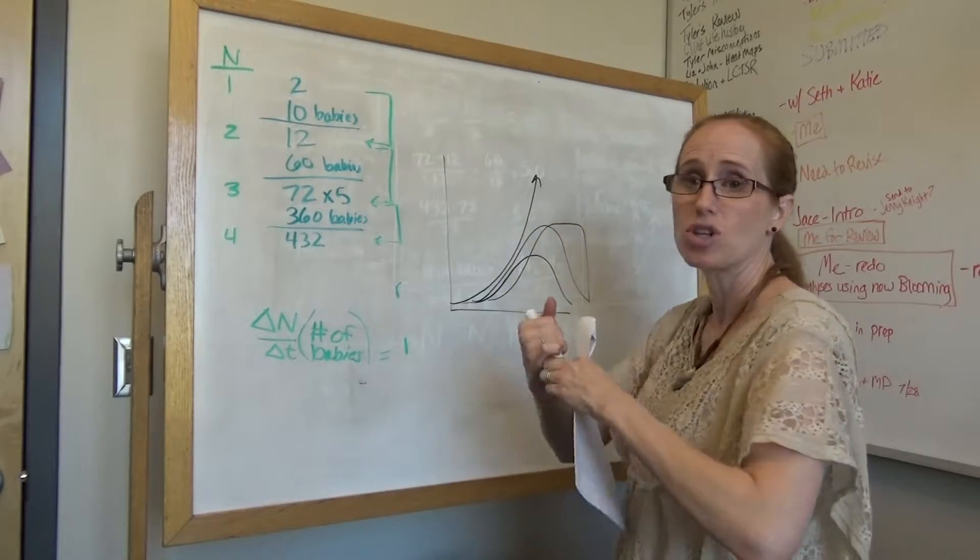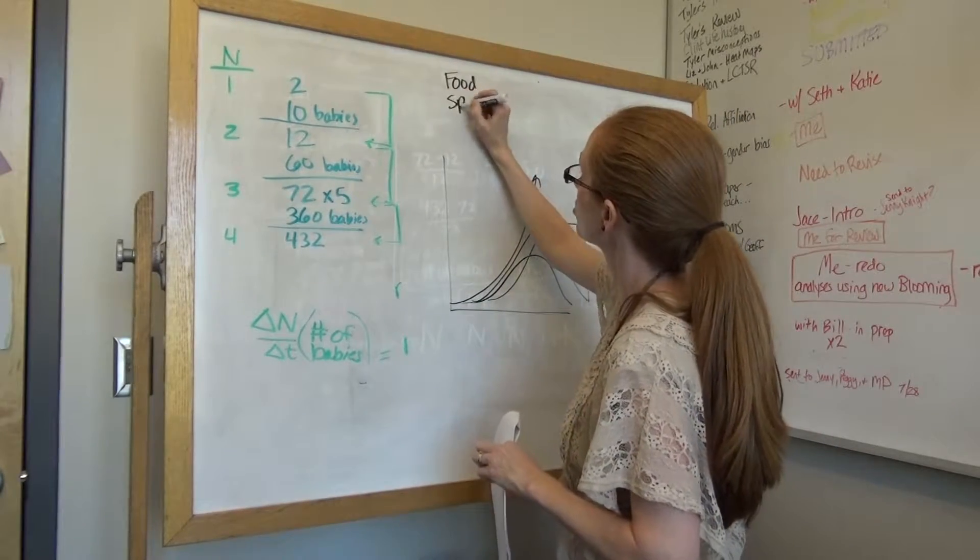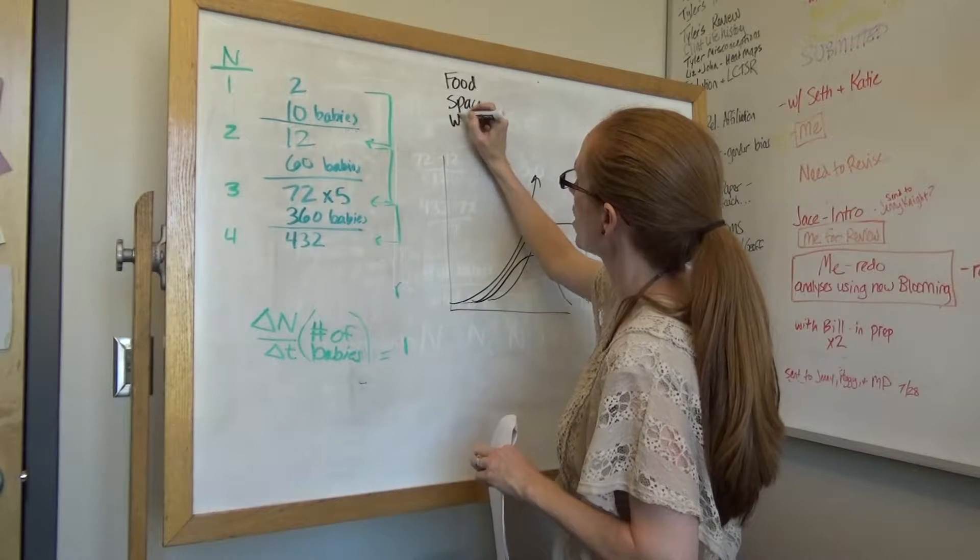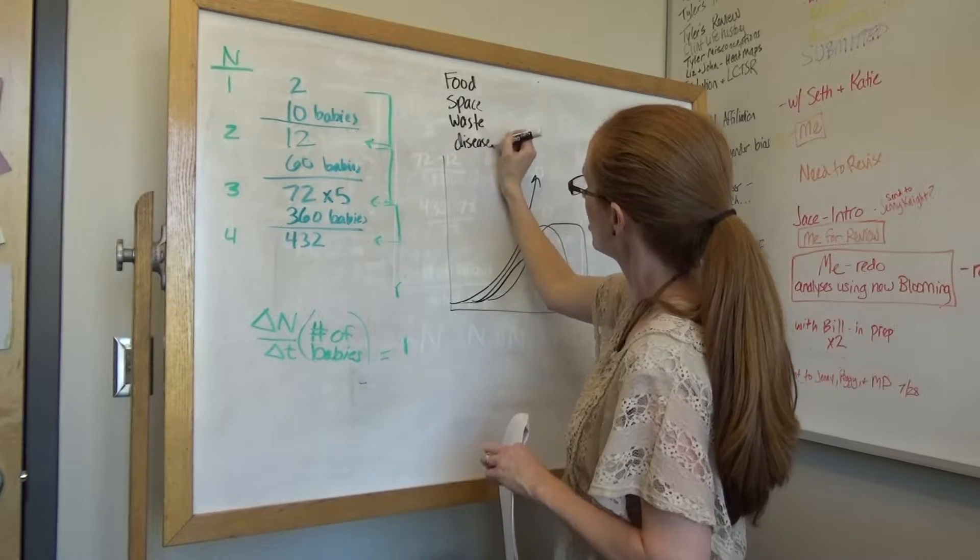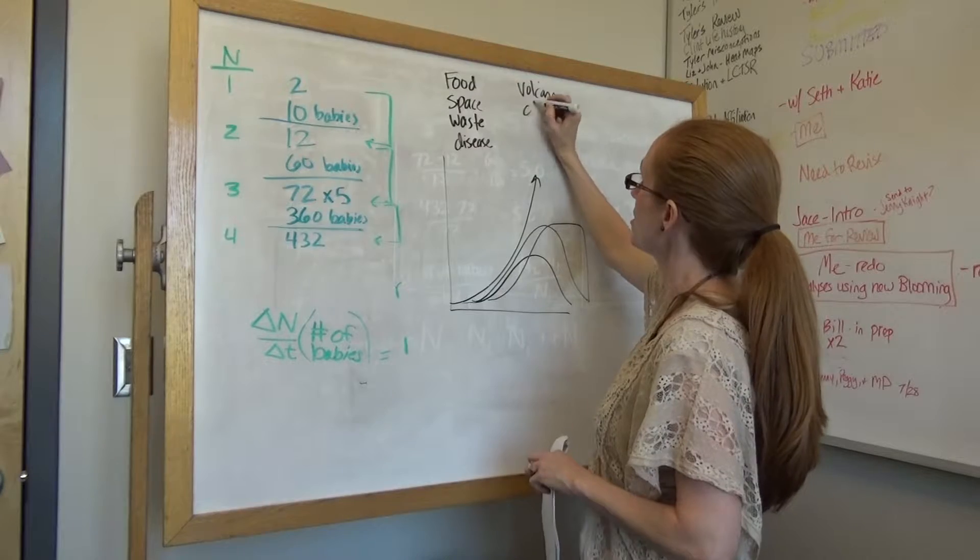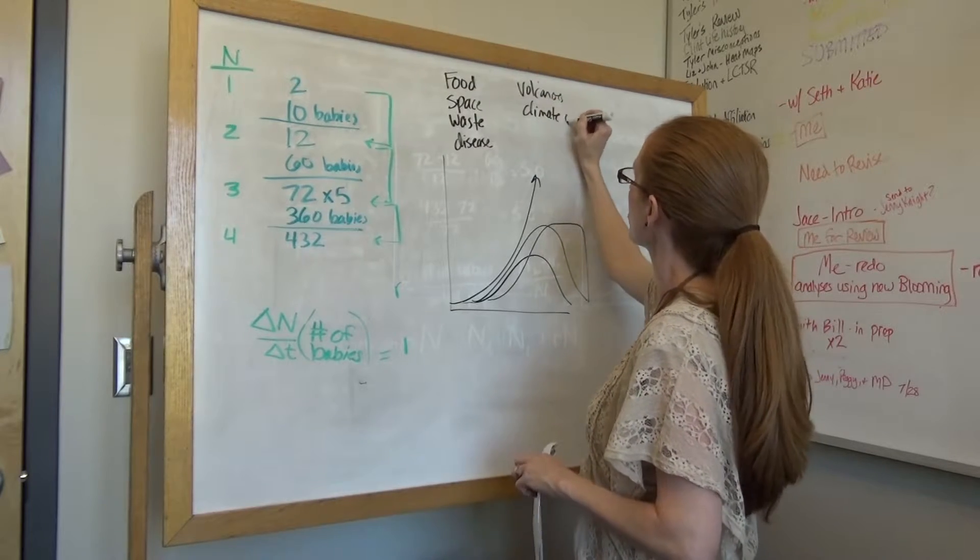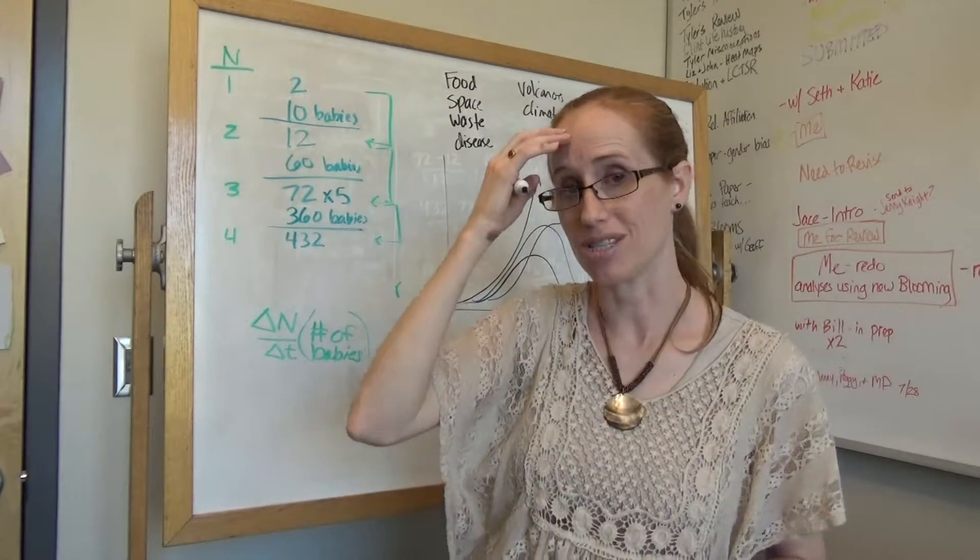And have them start listing limiting factors, like food, available food, available space, the buildup of waste products, disease. Okay, but you can also have things like volcanoes, or climate change, or any number of other things that could cause the limit to the population size.